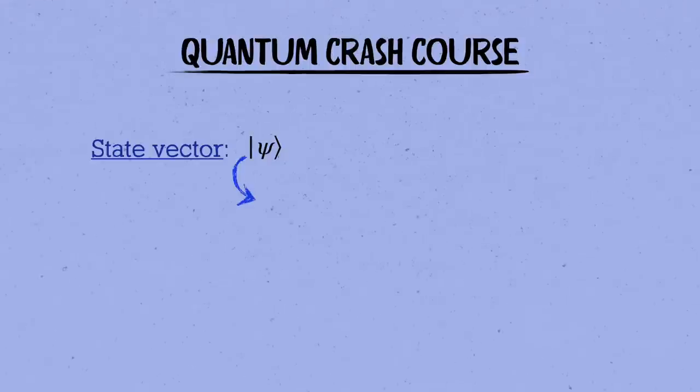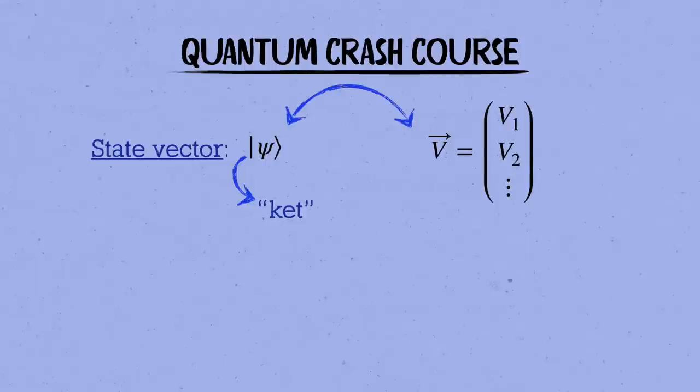In quantum mechanics, the state of a system, like a particle or atom or whatever else, is described by the state vector. I'm using the Greek letter psi here, and the bar and angled bracket is the notation we usually use for vectors in quantum mechanics. It's called a ket. It's a generalization of an ordinary column vector. The state vector psi contains all of the information we can get about our particle.